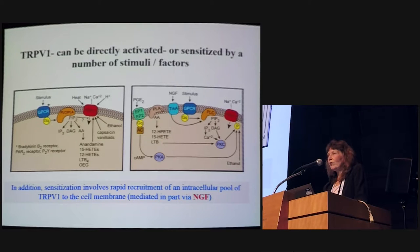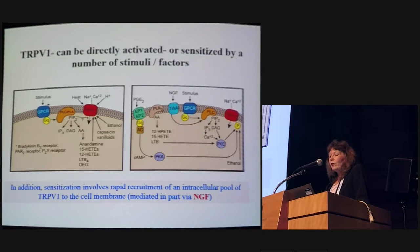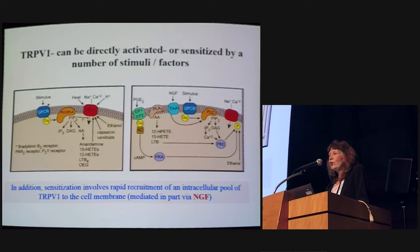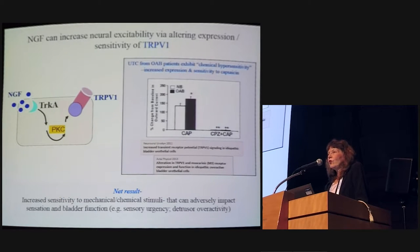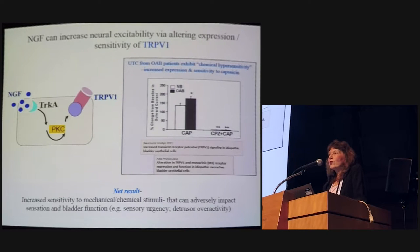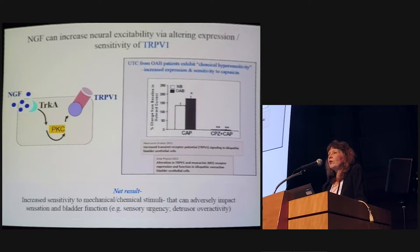TRPV1 can also be sensitized indirectly by factors including nerve growth factor, prostaglandins, and hormones. Importantly, sensitizing this channel involves recruitment of intracellular TRP receptors from the cytosol to the membrane. Nerve growth factor (NGF) can increase the excitability of bladder nerves and epithelial cells by altering both the expression and sensitivity of TRPV1 — literally pushing TRPV1 to the membrane via a PKC-dependent mechanism.